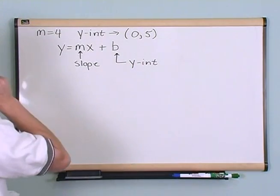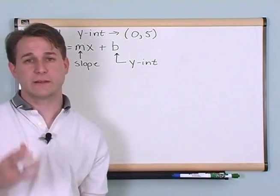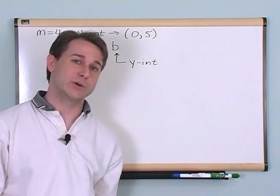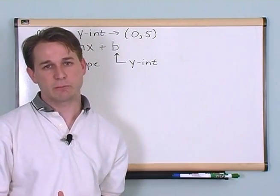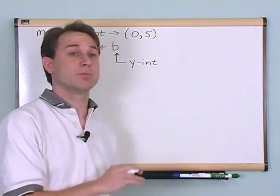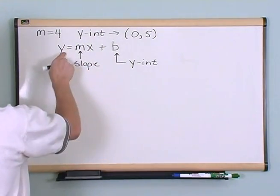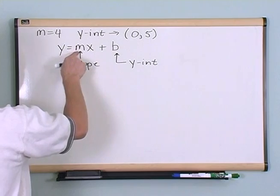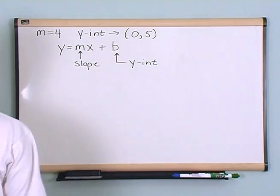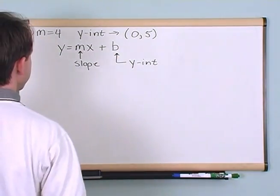Really all you have to do is memorize that. This is one of those things you really need to memorize, and you will by working these problems. By knowing that y equals the slope times x plus some number b — the y-intercept — you can immediately write down the equation of the line.